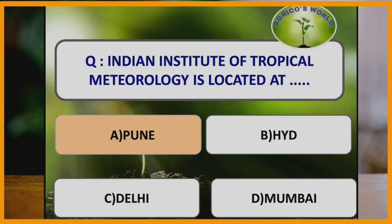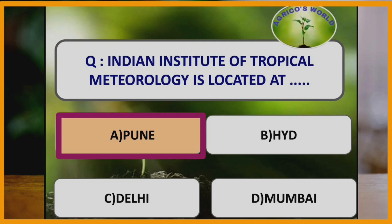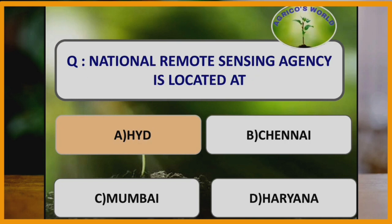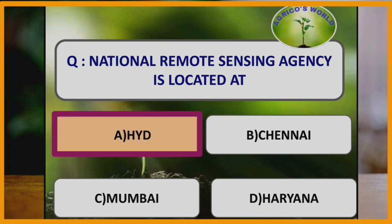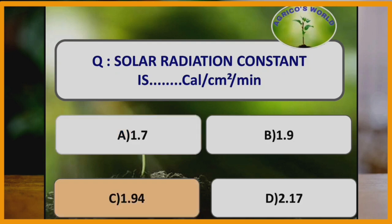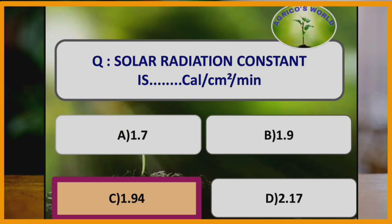Indian Institute of Tropical Meteorology is located at Pune. National Remote Sensing Agency is located at Hyderabad, whereas the Indian Institute of Remote Sensing is located at Dehradun. Solar radiation constant is 1.94 calories per centimeter square per minute.